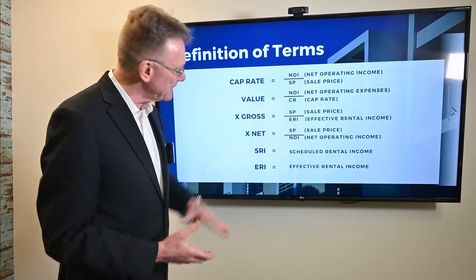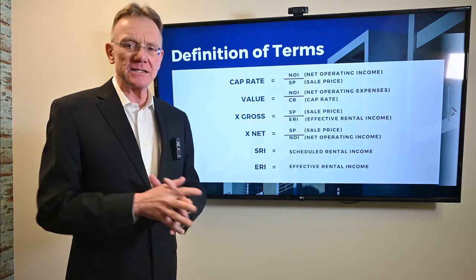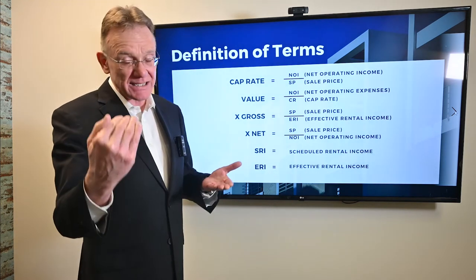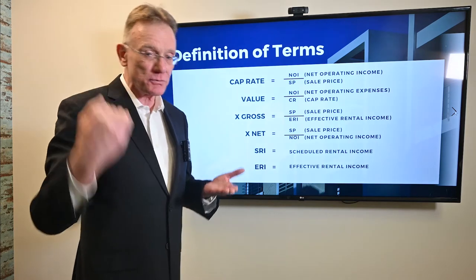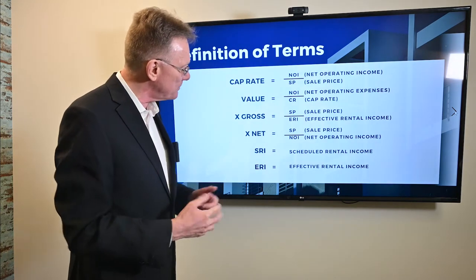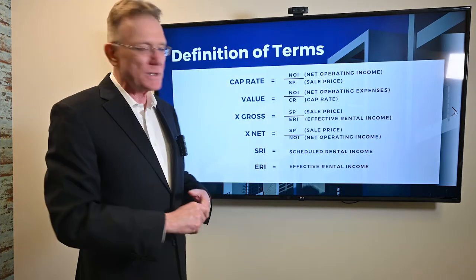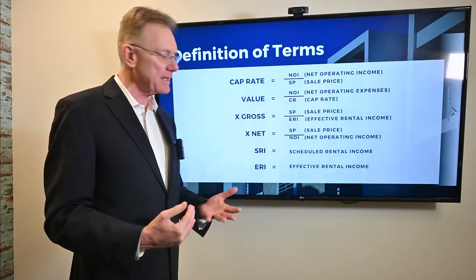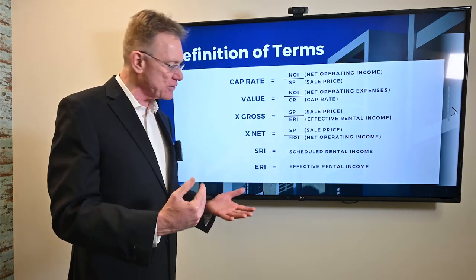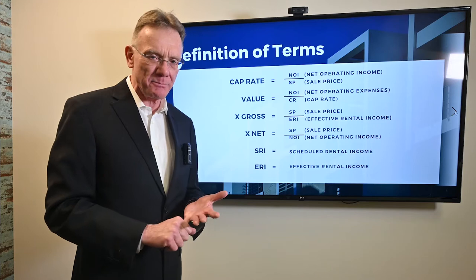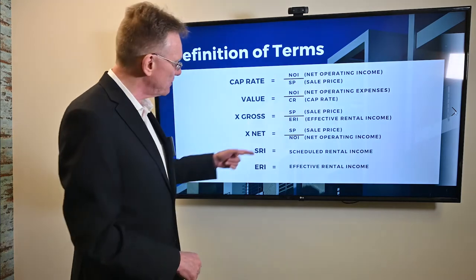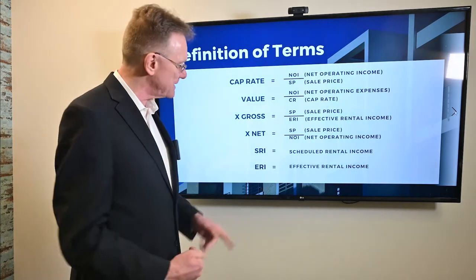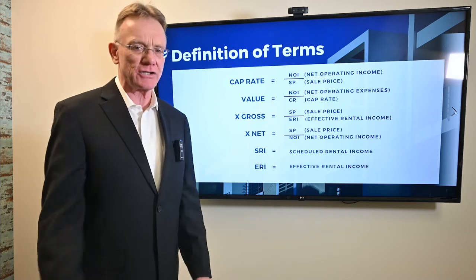The effective rental income is a number once you deduct — let's say in this case 3% — from the scheduled rental income. That gives you what banks or appraisers call an effective rental income, which accounts for things like vacancy and bad debt. So it's your SRI minus 3% for vacancy and bad debt, which gives you your ERI.